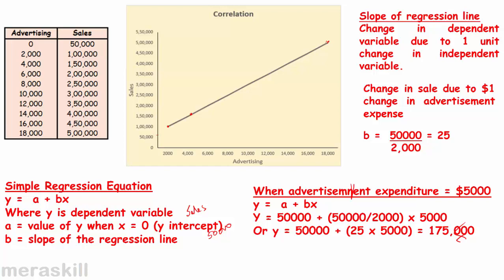So through the regression line, if the advertising expenditure is $9,000 or $17,000, we can predict what the expected sales would be. It may not be exactly correct, but this line more or less accurately tells us what the expected sales could be for given advertising costs. The regression line tells you the strength and the direction. Here it is positively correlated — as advertisement expenditure goes up, sales also go up. This applies to a specific organization's data and may be totally different for different business houses.